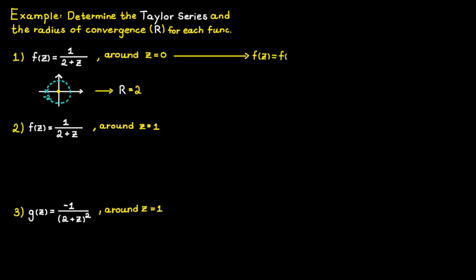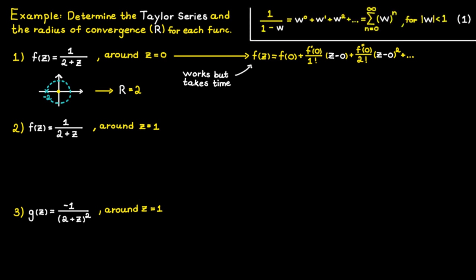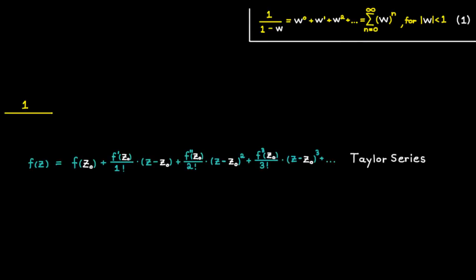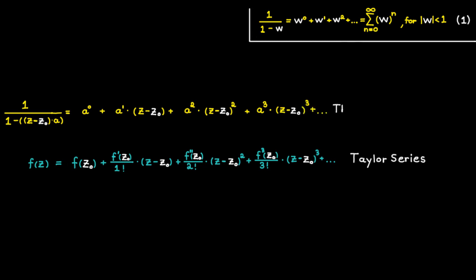Let's continue by determining the expression for the Taylor series. Since we are expanding around the point c equals zero, the Taylor series must have this form. Even though we can determine the coefficients with the help of the function's derivatives, we don't do it that way because it takes a lot of time. In complex analysis we use known geometric series and manipulate them so that they look like our Taylor series. The geometric series most frequently used is the following, which is only convergent if the absolute value of w is smaller than one. If we insert c minus the point of expansion times a random factor as our w, we get something that looks exactly like our Taylor series.